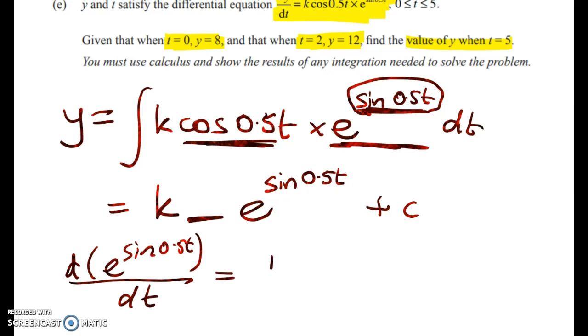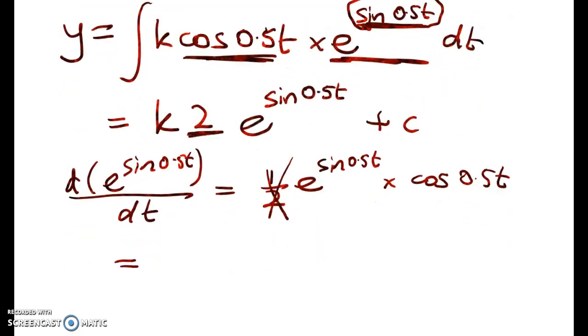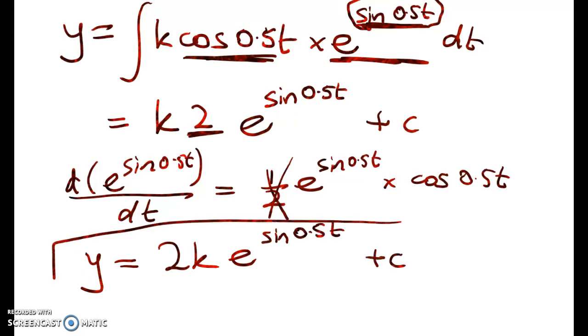that'll give me one half e to the sine 0.5t times cosine of 0.5t. So we don't want that half, so we need to undo the half by multiplying by 2. So that's very silly how I've written it. We'll rewrite that as 2k, so y is equal to 2k e to the sine of 0.5t plus c. So that's the first part of the problem done.